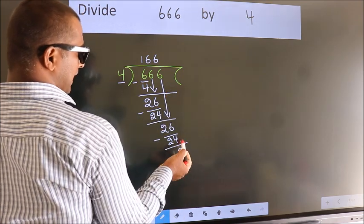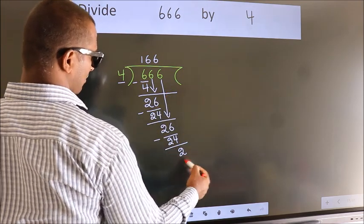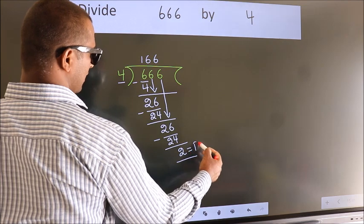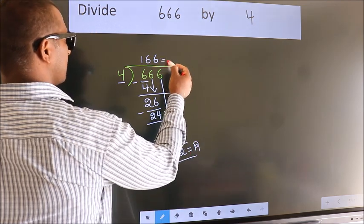No more numbers to bring down. So we stop here. This is our remainder. This is our quotient.